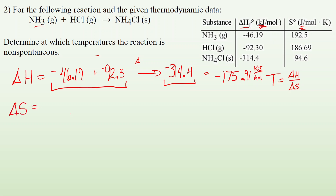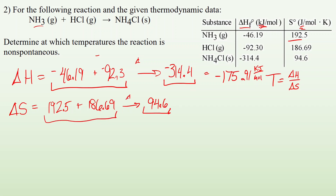For the change in entropy, using the same products-minus-reactants process: NH3 gas is 192.5 J/mol·K, HCl is 186.69 J/mol·K, and NH4Cl is 94.6 J/mol·K. The change in entropy is negative 284.59 joules per mole Kelvin. Converting to kilojoules by dividing by 1000 gives negative 0.28459 kilojoules per mole Kelvin.